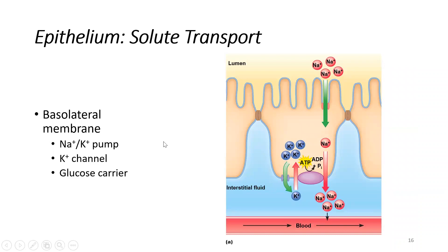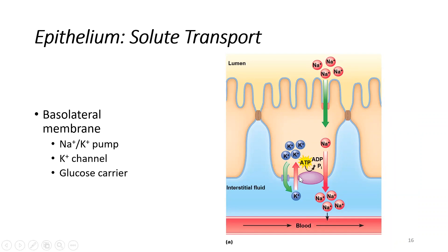In the basolateral membrane of the epithelial cell, we have several embedded structures: the sodium-potassium pump, potassium leak channels, and facilitated glucose carriers. The sodium-potassium pump, as a review, facilitates primary active transport — it uses hydrolysis of ATP to move sodium and potassium against their respective gradients, as reflected by the red arrows on the diagram.